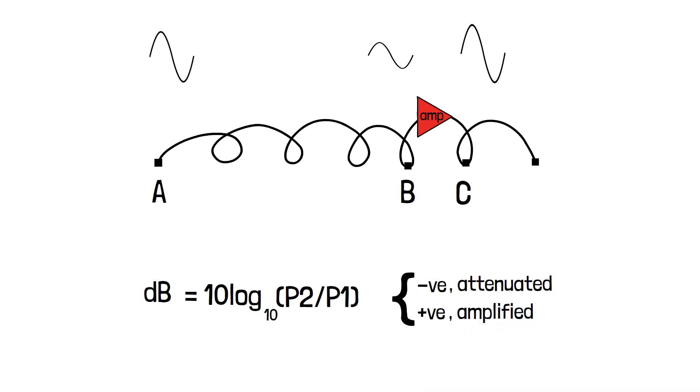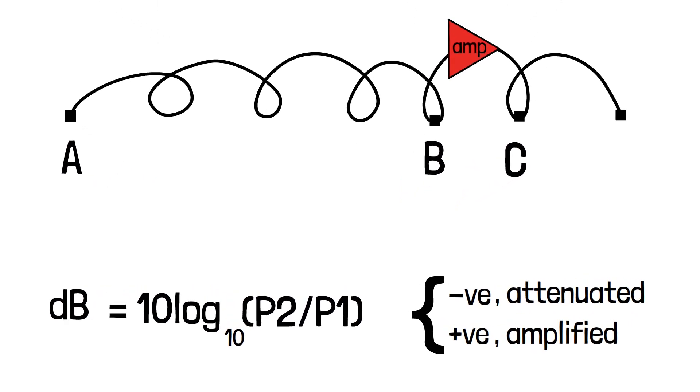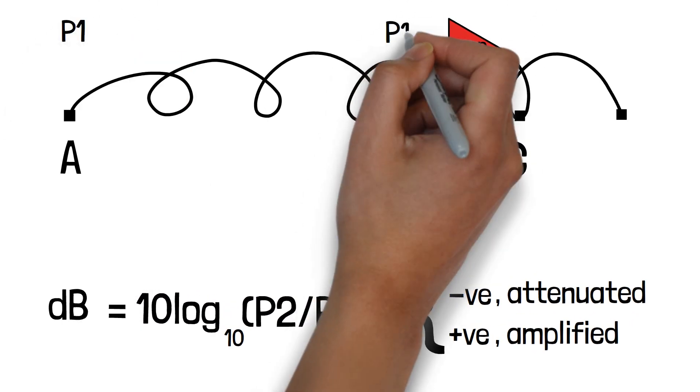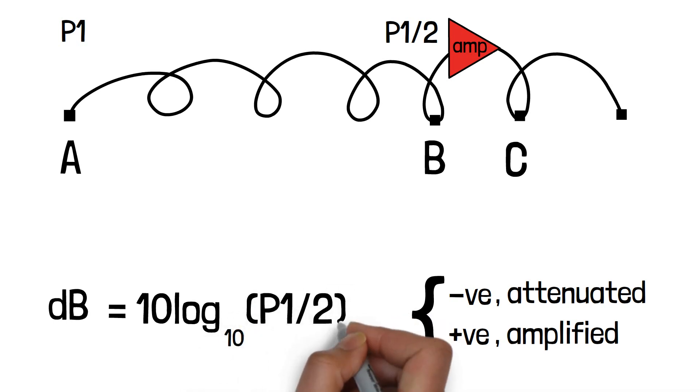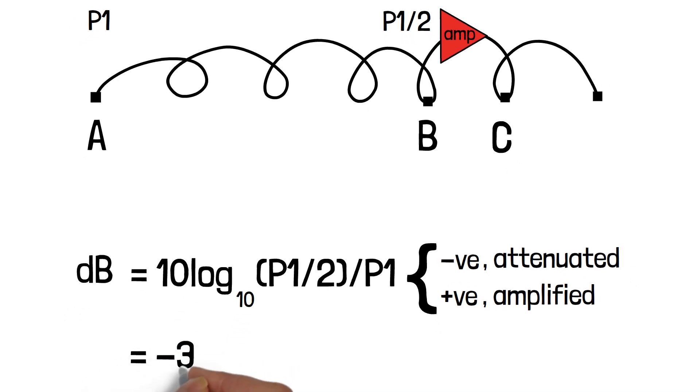Let us take an example. A signal travels through the transmission medium and its power is reduced to one half. Then one can calculate the decibel value as 10 log to base 10 P1 by 2 divided by P1, which comes out to be minus 3 decibel. It means the signal is attenuated by 3 decibel.